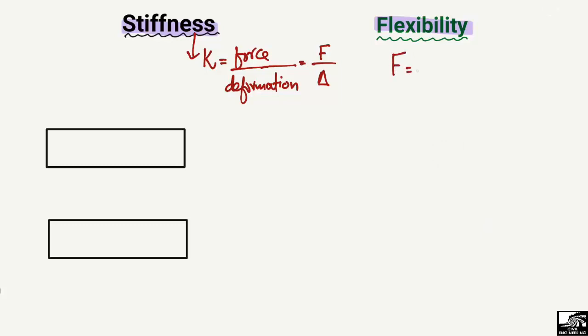Flexibility is totally opposite to stiffness. It is represented by f, and it is equal to deformation divided by force — delta divided by F. So these two are material properties but are quite different from one another.